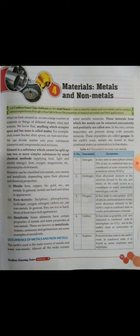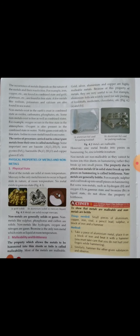Some non-metals that occur in nature are nitrogen, hydrogen, oxygen, carbon, and sulfur. The series of processes carried out to extract pure metals from their ores is called metallurgy. Some names of ores are bauxite, iron pyrites, hematite, and copper glance.